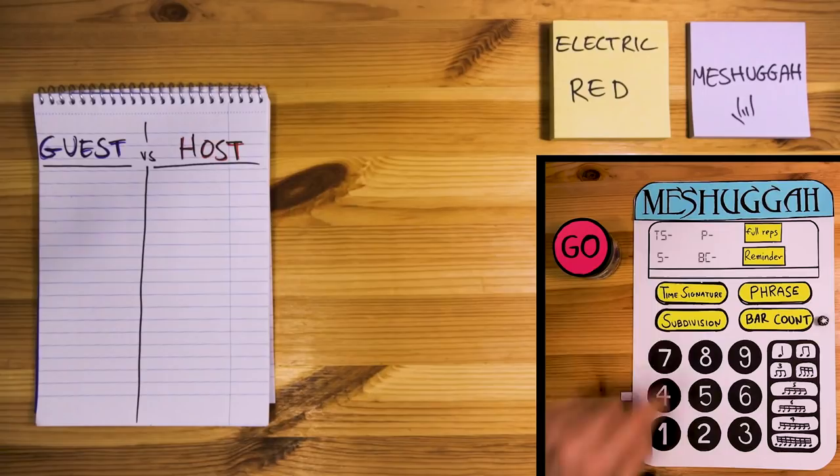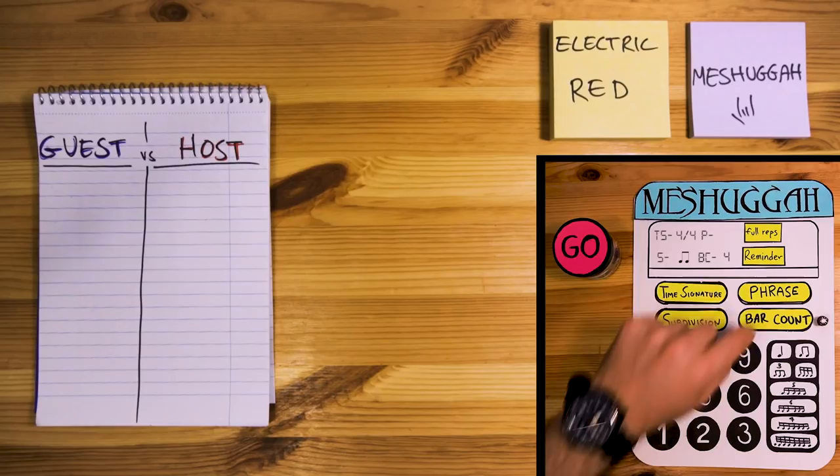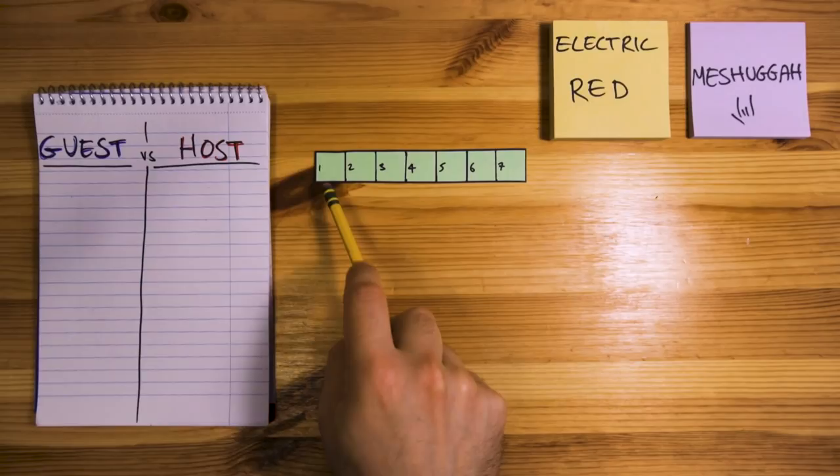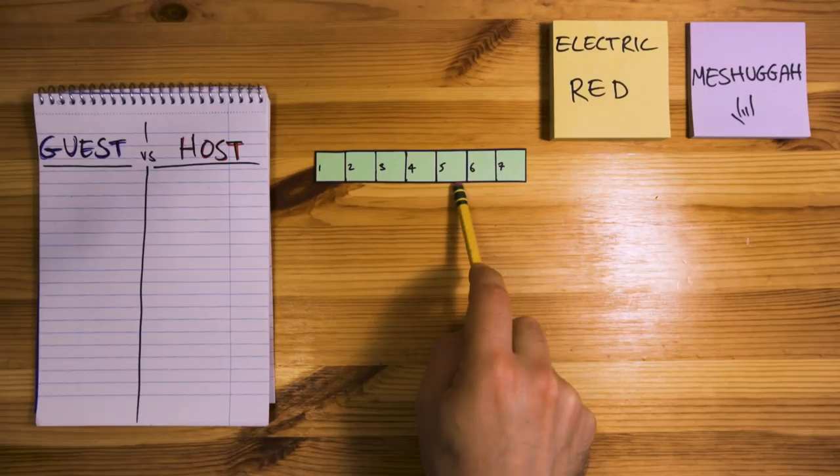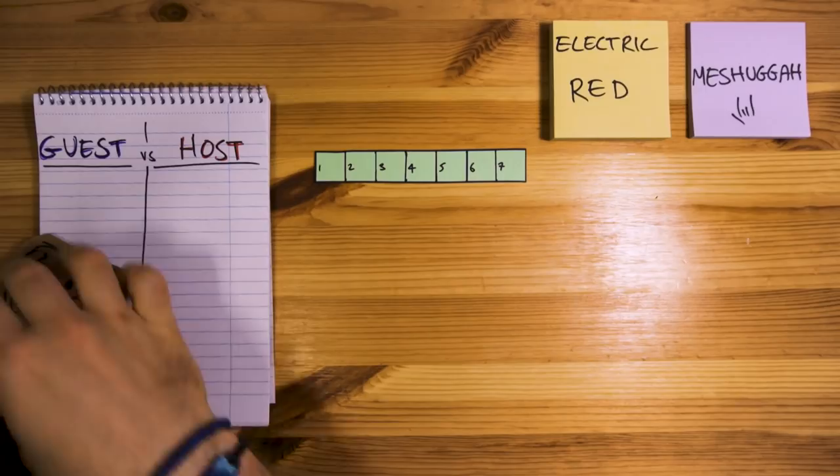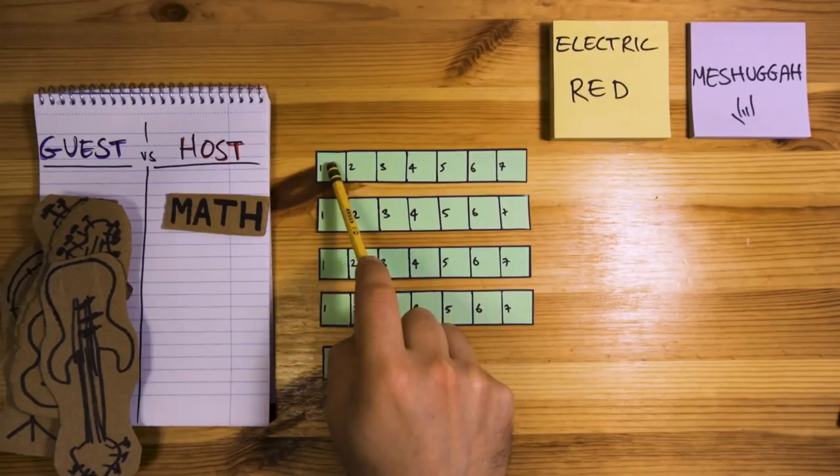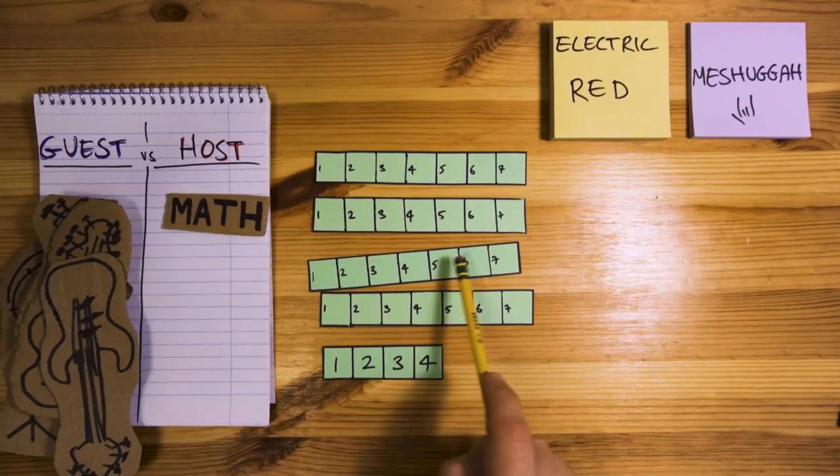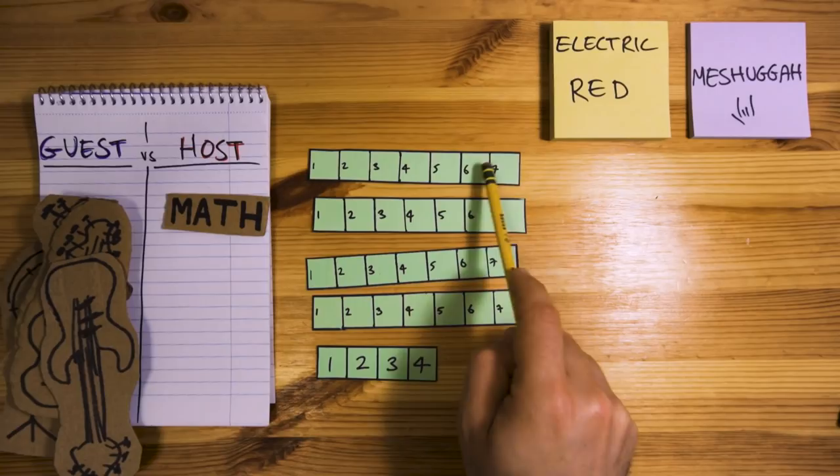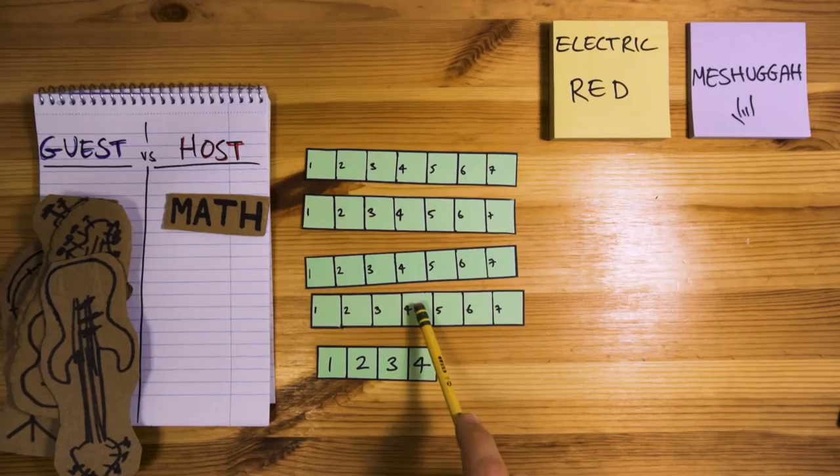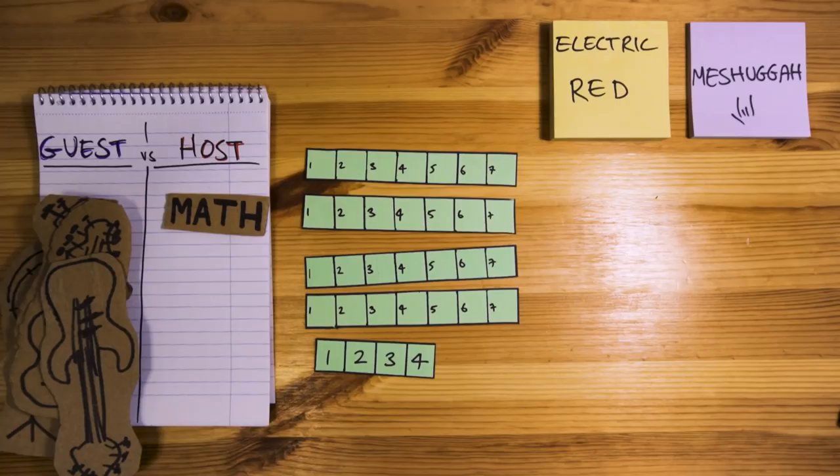This opening riff is pretty simple. We're in 4-4, with an 8th note subdivision, and this section is 4 bars long. The phrase we have here is in 7, and it sounds like this. All instruments here are playing the riff, so our faith in math is what keeps the 4-4 alive. And as you can see in the calculator, we get 4 full riffs, plus 4 8th notes at the end. Quite a way to open a song!